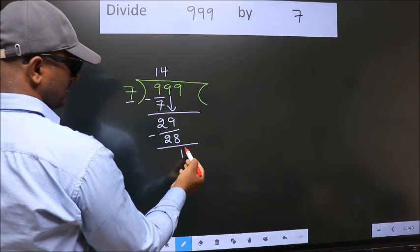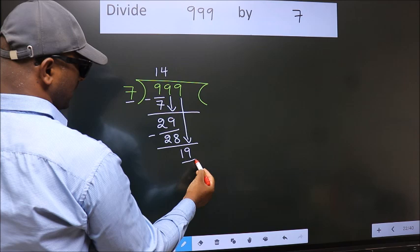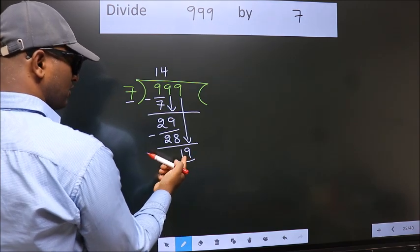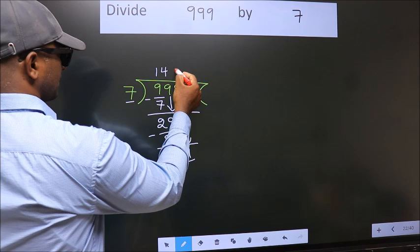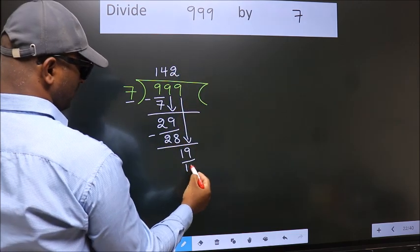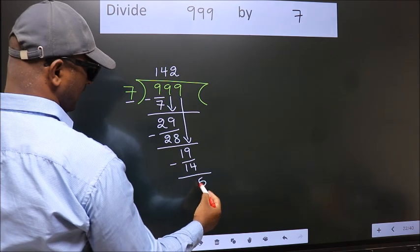After this, bring down the beside number. So, 9 down. So, 19. A number close to 19 in 7 table is 7 twos 14. Now, we subtract. We get 5.